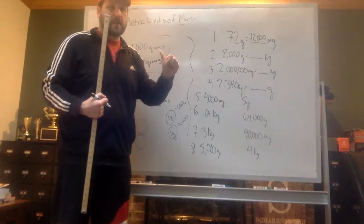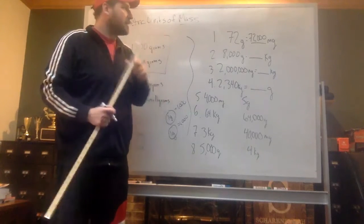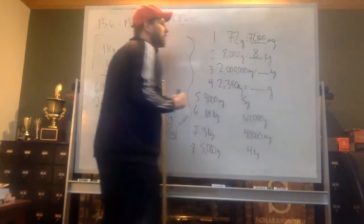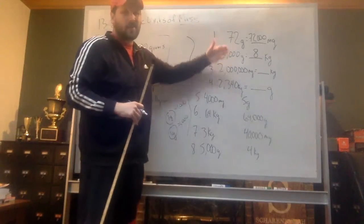7,000, 8,000. That means there'd be 8 kilograms. Because every thousand is one. So you're just taking that 8,000 and you're dividing by 1,000 really.